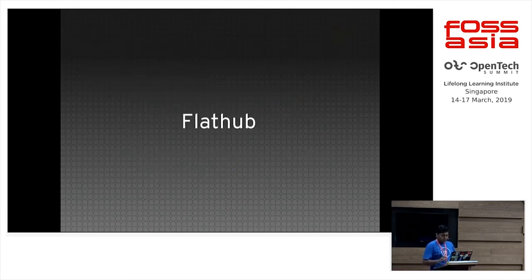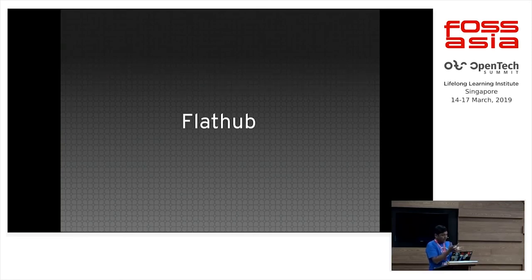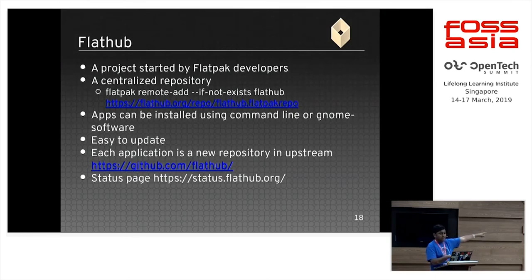There is one more thing called Flathub. Flathub is like a distribution website — a central hosting repository where many applications built daily are hosted. You just need to enable that repository on your system and start pulling applications. The command is: flatpak remote-add --if-not-exists flathub [repo-url].